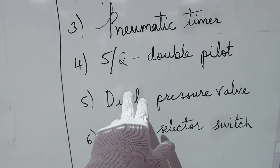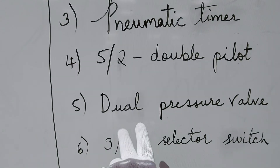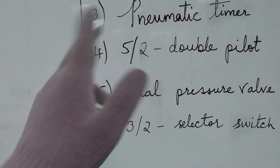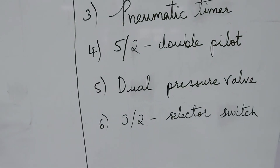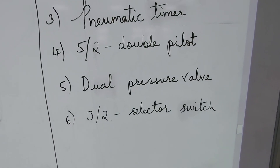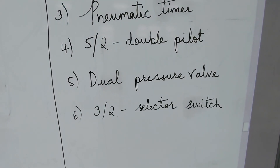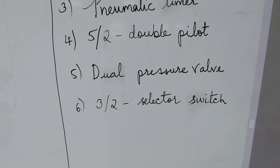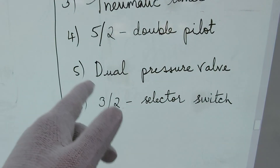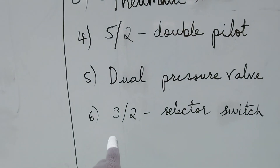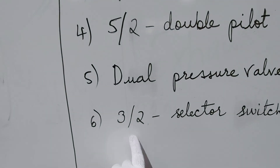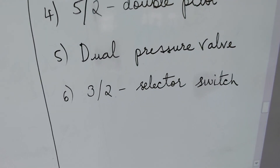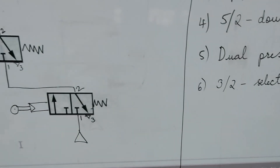What does the dual pressure valve mean? You have to have pressure from two sides to make it work. And the sixth component is a 3x2 selector switch.